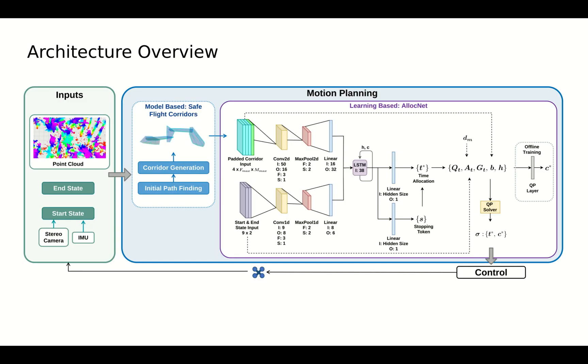We propose a time allocation network to learn time intervals for trajectory generation, and the architecture is shown in the video. We directly take point clouds to generate free space representation by safe-flight corridors.